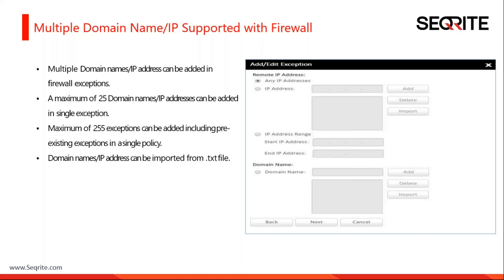In our firewall we can set up multiple domain names and IP addresses in firewall exceptions. A maximum of 25 domain names or IP addresses can be added in a single exception, and a maximum of 255 exceptions can be added including existing exceptions in a single policy. Domain names or IP addresses can also be imported from any .txt file.